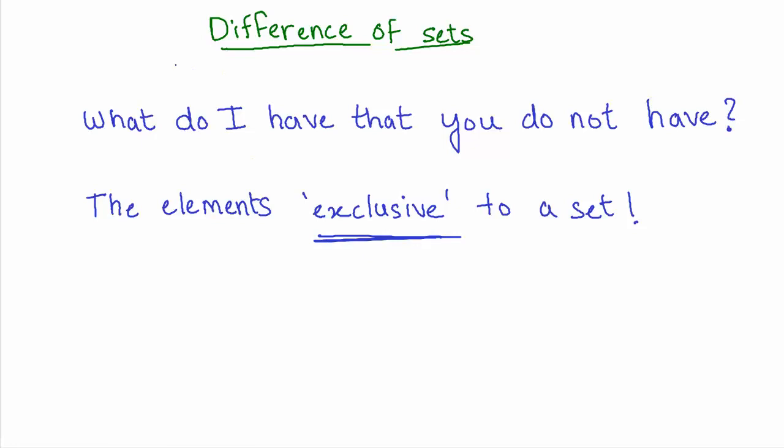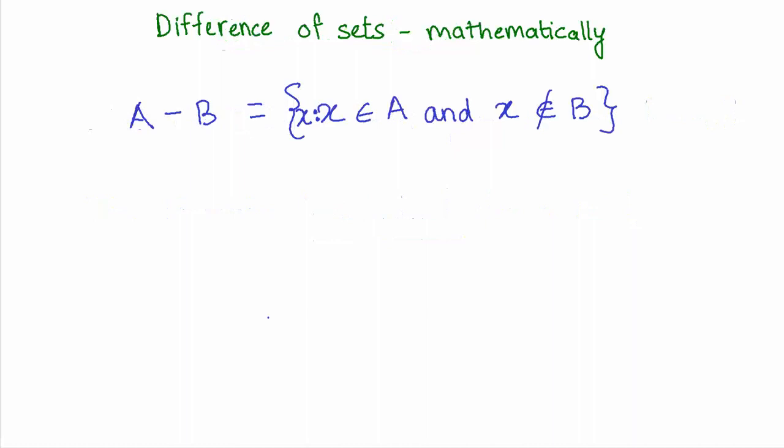How am I different than another set? That's what difference is about. So how would a mathematician represent difference of sets? It is represented using the minus sign, as we do when we subtract two numbers. The way in which difference is defined: A minus B comprises of all the elements which are present in A but they are not present in B.